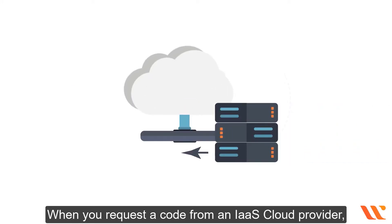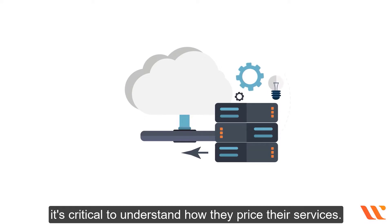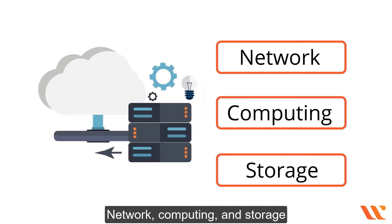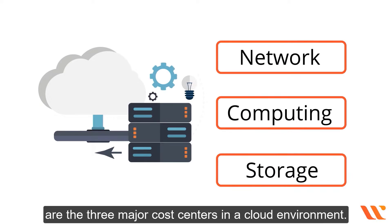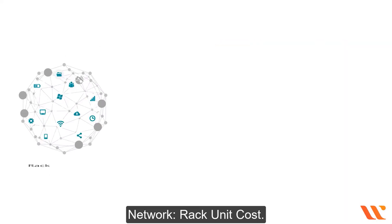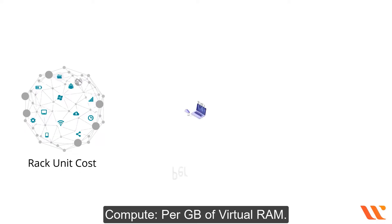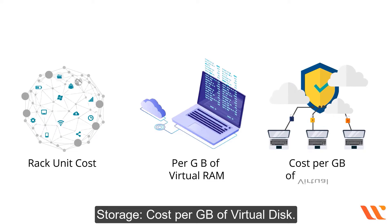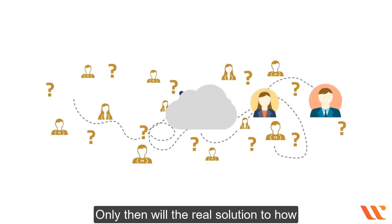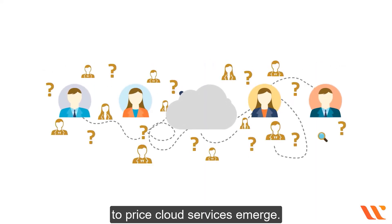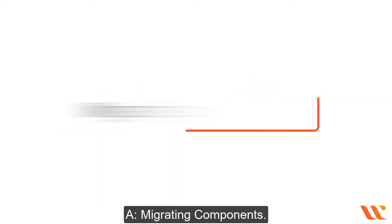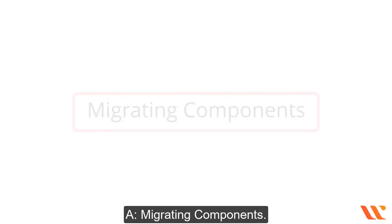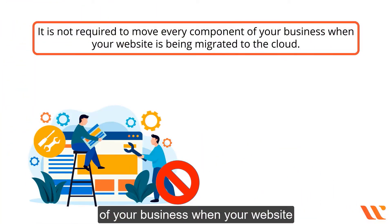When you request a quote from an IaaS cloud provider, it's critical to understand how they price their services. Network, computing, and storage are the three major cost centers in a cloud environment: network rack unit cost, compute per GB of virtual RAM, and storage cost per GB of virtual disk. Understanding these will help the real solution to pricing cloud services emerge.